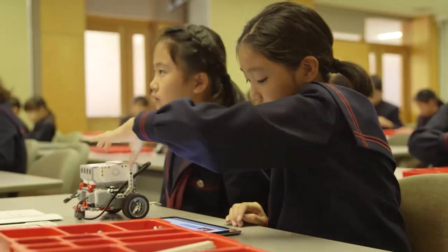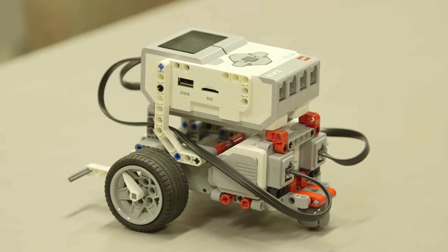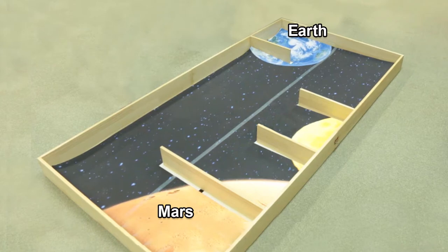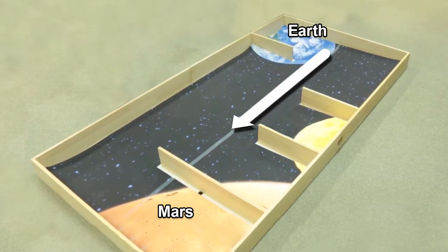The class splits into two-person teams, each with a pre-assembled wheeled robot. Today's challenge is to get the robots to maneuver this obstacle course from Earth to Mars. There's no direct route.